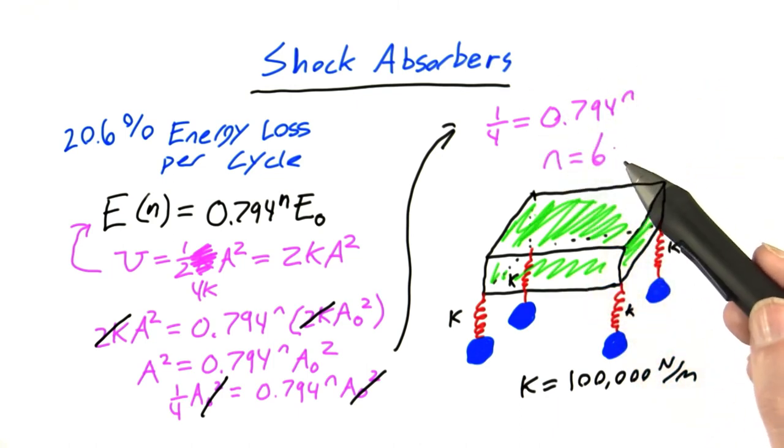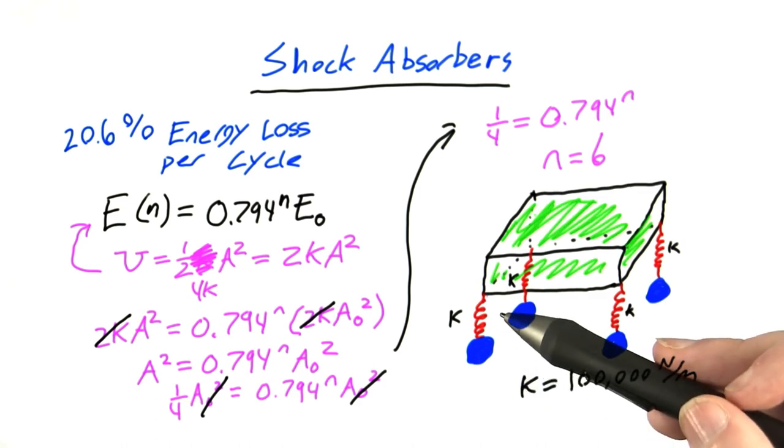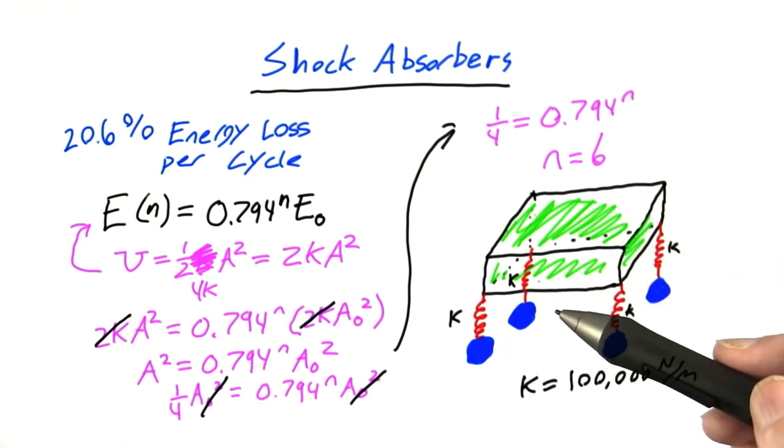So this means it takes 6 cycles, 6 complete oscillations, in order for the amplitude of our spring oscillations to decay to one half their original value.